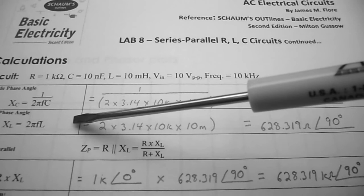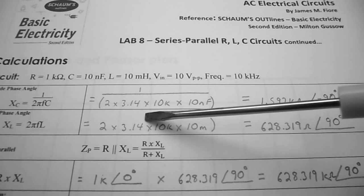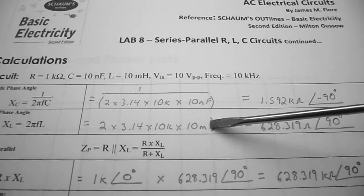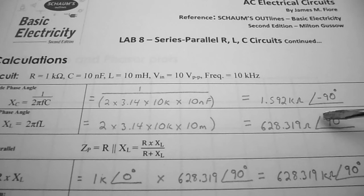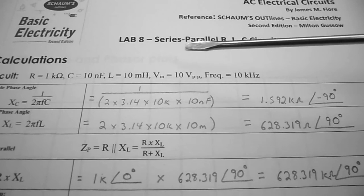Calculating XL equals 2πFL, so that's 2 times 3.14 times 10k times 10 milli, and that equals 628.319 ohms at an angle of 90 degrees. Keep in mind our resistor value R is 1k ohms at an angle of 0 degrees.